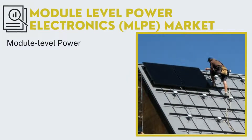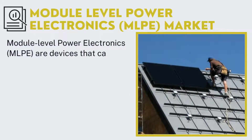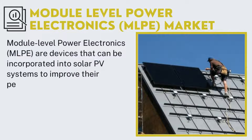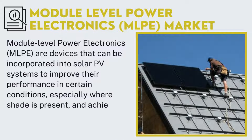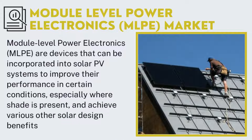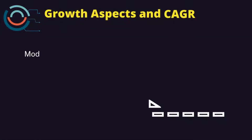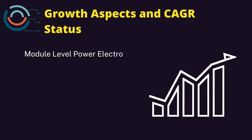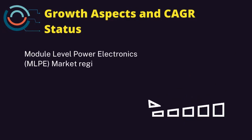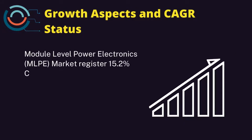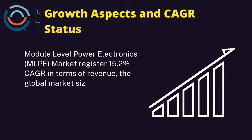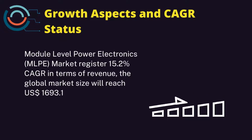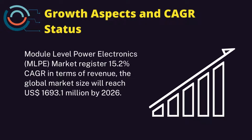Module-level power electronics (MLPE) are devices that can be incorporated into solar PV systems to improve their performance in certain conditions, especially where shade is present, and achieve various other solar design benefits. The MLPE market registers 15.2% CAGR in terms of revenue; the global market size will reach 1,693.1 million US dollars by 2026.